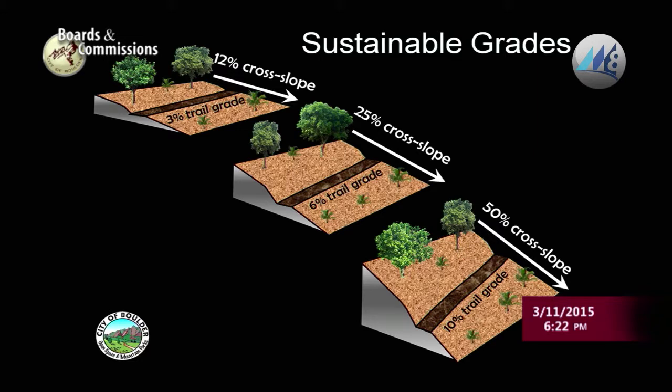On a slightly steeper hillside with a 25% cross slope, we can go 6%, 7%, maybe 8% grade and expect very little erosion. On a 50% cross slope — a pretty steep hillside — we can go about 10%. The math suggests we could go maybe 16% or 17%, but we cap out at 10% because that's really the maximum before we start to see a lot of erosion.